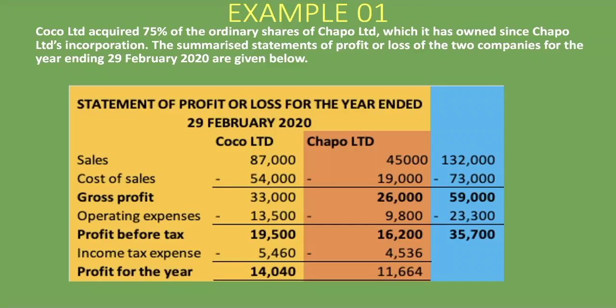After adding the income tax expense of 9,996 rand, we get our profit for the year: 35,700 minus 9,996 gives us a profit for the year of 25,704 rand. We've now added together everything line by line — that's as easy as it can get.